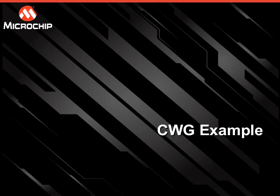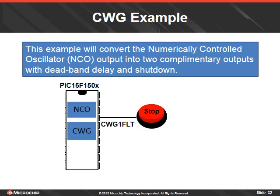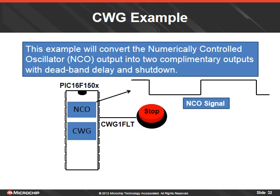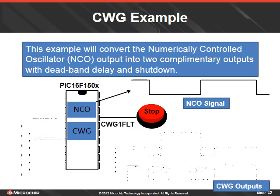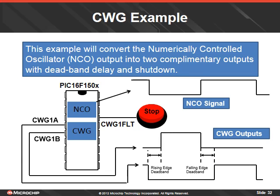This example will convert the numerically controlled oscillator output into two complementary outputs with deadband delay and shutdown. When the stop button is pushed, bringing the CWG-FLT pin low, the output signals will both go to ground potential. The NCO module will produce a square wave input to the CWG module. The output signals will be complementary outputs of the NCO square wave input. Let's step through the software setup.